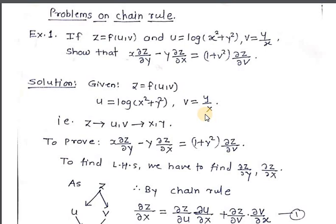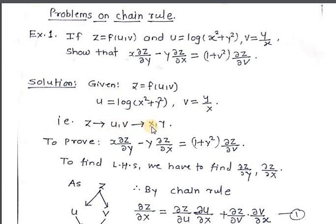Now, what are the given things in the example? We write: z is equal to f(u, v); u is given as log of x square plus y square; v is given as y upon x. If we observe, z is a function of two variables u and v, and u and v are functions of x and y. So z is a composite function of x and y.